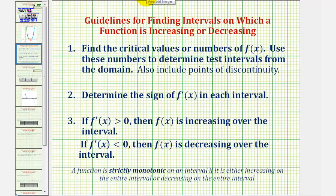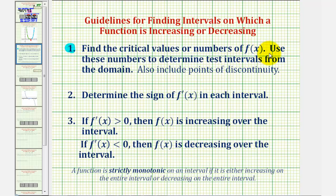For a quick review, here are the guidelines for finding intervals for which a function is increasing or decreasing. Step one, we find the critical numbers or critical values of the function by determining where the first derivative is equal to zero or undefined. Then we'll use the critical numbers to determine the test intervals using the domain of the function.